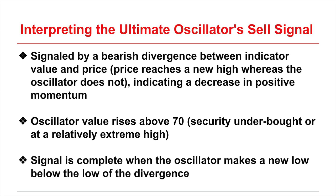The sell signal is, to some extent, the converse of the buy signal. It is signaled by a bearish divergence between indicator value and price — price has reached a new high whereas the oscillator has not, indicating a decrease in positive momentum or buying pressure. The second step is that the oscillator value rises above 70 during the divergence, and the signal is complete when the oscillator makes a new low below the low of the divergence.